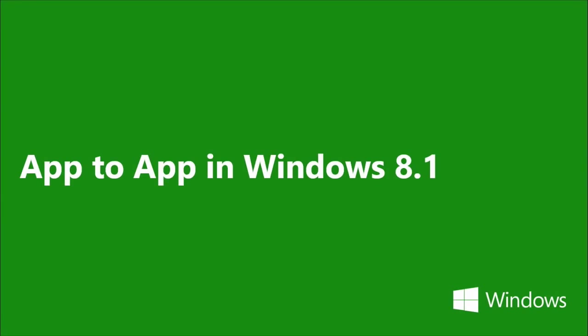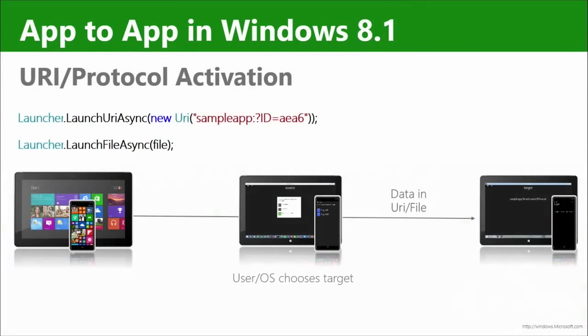Let's walk down memory lane and see what app-to-app communication was like in Windows 8.1. So two primary techniques here: URI activation and protocol activation. They're complementary. The receiving app is installed and in its manifest it declares that it will answer launch requests for a specific URI or particular protocol. In this example, the protocol is 'sample app colon' — you kind of cook up your own pretend URI.